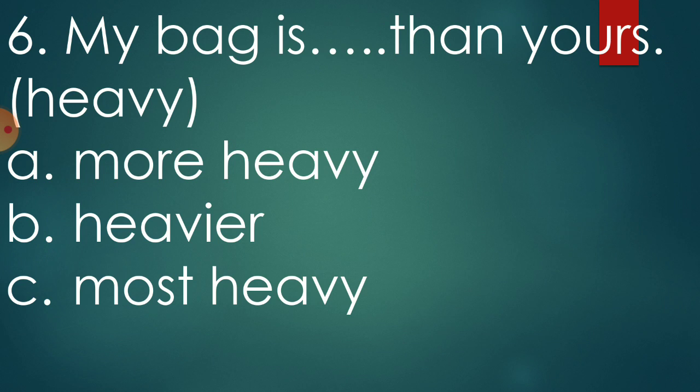Then, let us move to sixth question. My bag is dash than yours, heavy. Now, we have to make use of correct degree of comparison. Of course, by seeing the sentence, we understood that, which degree of comparison will come here? Here, the bag is compared. With whom? With my bag and your bag. So, option A, more heavy will come. Heavier will come or most heavy.